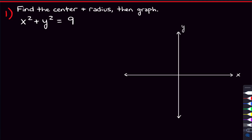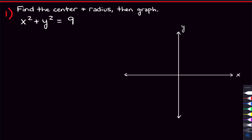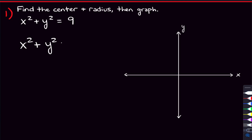For this first problem, we want to find the center and the radius of the circle and then graph it. The general equation for a circle whose center is at the origin and whose radius is r is: x squared plus y squared equals r squared.